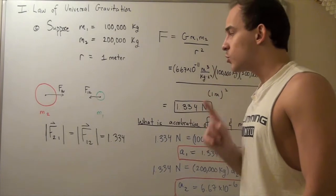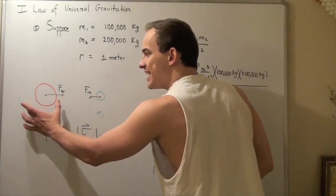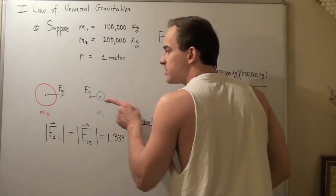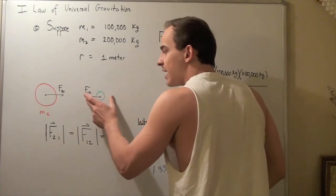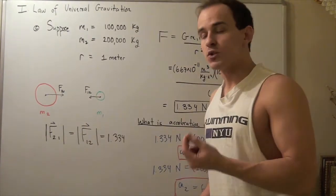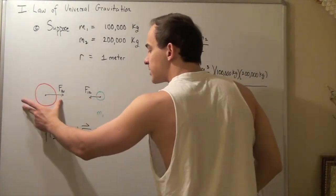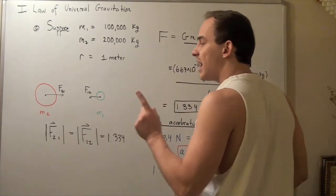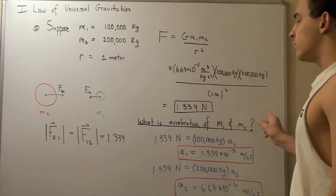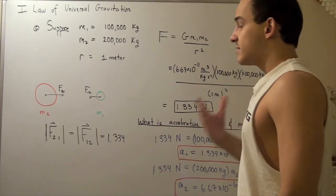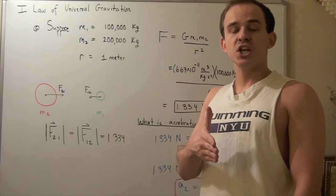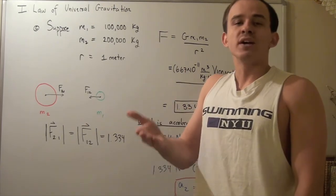Now I want to ask: at what acceleration is each object moving toward the other? Because this object creates a force on that object, and a net force creates acceleration. Note that object 1 is twice as light as object 2. To find the acceleration of both objects, we use force equals mass times acceleration. I know my force on both objects and I know my masses, so I can solve for my acceleration.